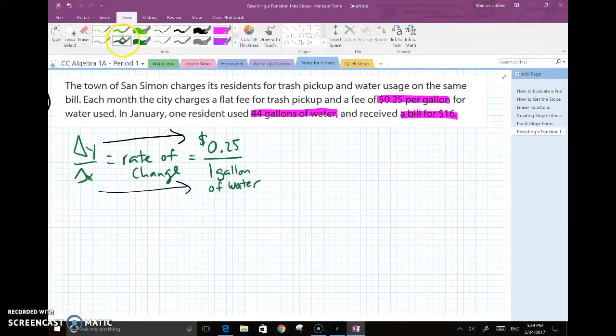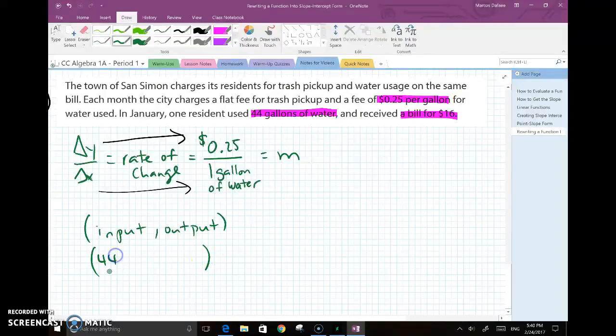So this is definitely something that we will be able to use because this is also known as our m, rate of change. However you want to call it, they all mean the same thing. And so now I look at the 44 gallons and the bill for $16. Well, to me, this seems like an input and output pair. Now remember, for a function to be a function, you have to have one input paired up with exactly one unique output. So in this case, if the resident uses 44 gallons of water, he will be charged $16. He won't be charged $16 if he uses 43 gallons or 45 gallons. But he will be charged that much if he uses exactly 44. So what this means is in terms of an ordered pair, we have 44 gallons as an input creates an output of $16 on the bill.